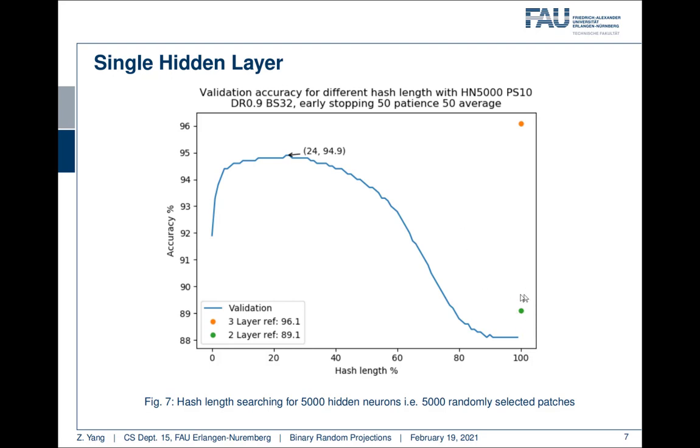All the parameters here between the input and the hidden and the output are trained. The green dot here is the two-layer reference, which directly projects the information from the input layer to the output layer and all the parameters in between are trained.